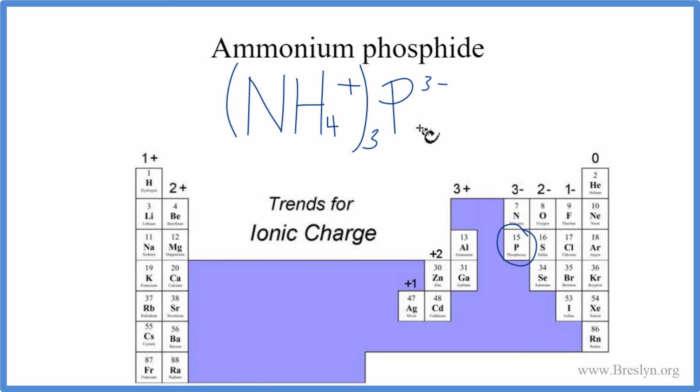So this is the formula for the ammonium ion. Let's remove our charges and clean it up a little bit. And this is the formula for ammonium phosphide, NH4, parentheses 3, P.